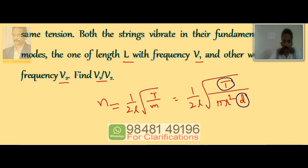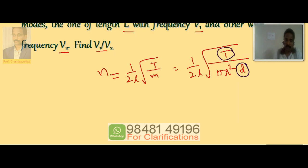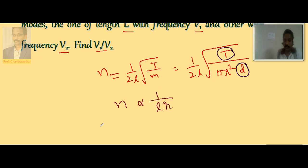Therefore we can take the equation N proportional to 1 by L into R. So N1 by N2 is equal to L2 by L1 into R2 by R1.